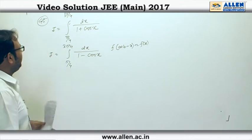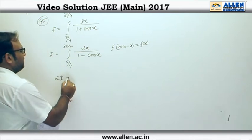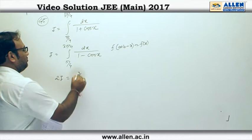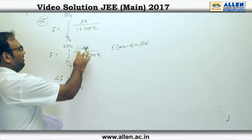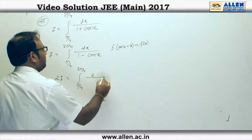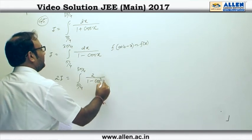Now, if we add these two integrals, we get 2I equals π/4 to 3π/4. If we add these two, we are going to get 2/(1-cos²x) dx.